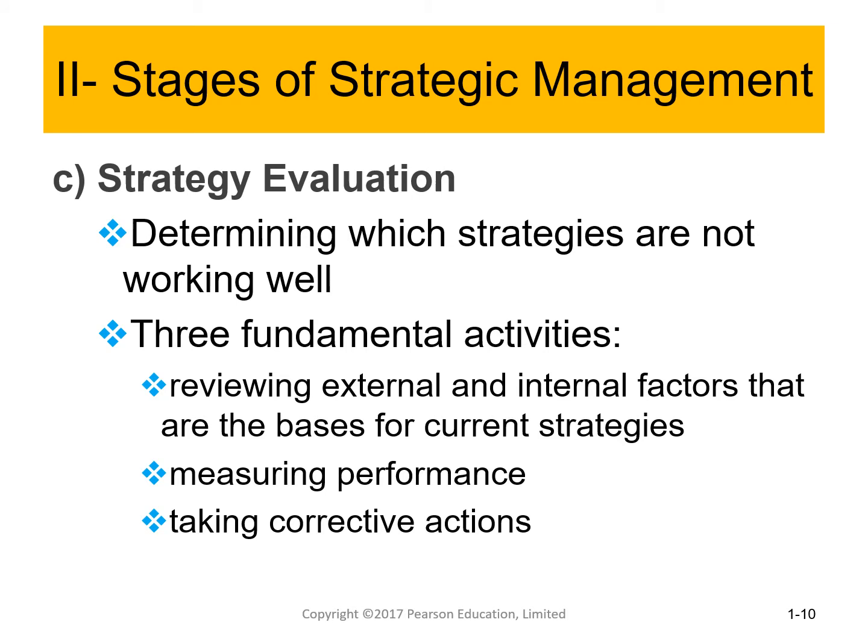Finally, strategy evaluation is where we review what was done in the previous two steps and check if it achieved what we wanted. There are three fundamental activities: reviewing external and internal factors, measuring performance, and taking corrective actions. If anything is not working correctly, we make modifications to get back on the right track toward our objectives.